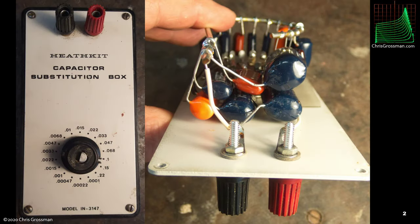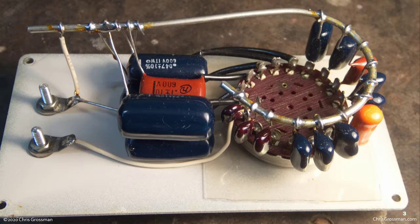I bought this Heathkit capacitor substitution box about 25 years ago at a ham radio swap meet and I've been using it ever since. I got curious to see what's inside because I never really opened it up, and I thought you might want to look at it too.